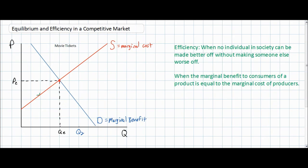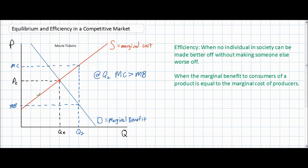At a quantity of Q2, let's go up and see the marginal benefit and marginal cost of movie tickets. Drawing our dotted lines up, we see that marginal benefit is very low at Q2 — there are simply too many movie tickets being provided and the additional benefit consumers enjoy is lower. However, the marginal cost of providing Q2 movie tickets is rather high. Therefore, the marginal cost of producing movie tickets exceeds the marginal benefit to consumers, indicating that resources are over-allocated towards movie tickets.